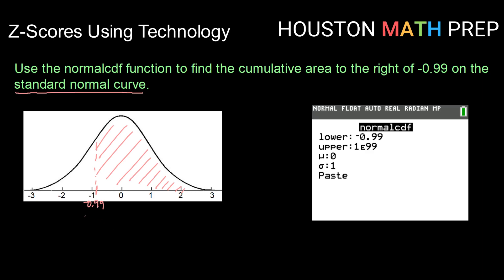When I think about lower bound, I'm going to use negative 0.99. And upper bound, I can use 1e99 for the calculator speak for positive infinity. Or again, just any really large value here, maybe like 10 million or 100 million, just any really large positive number will do.